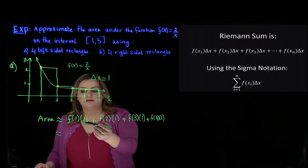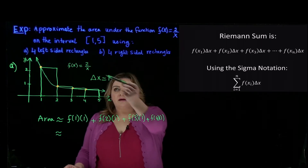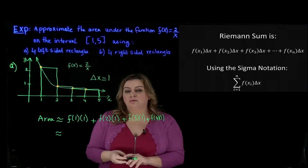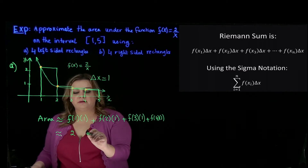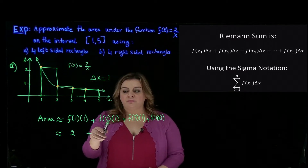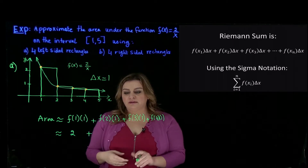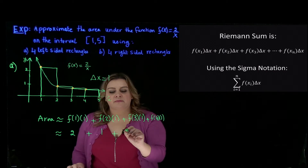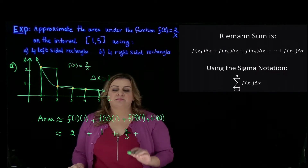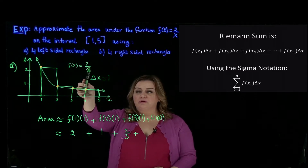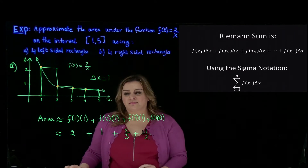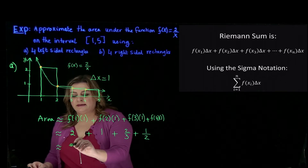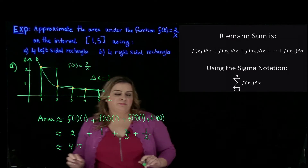Evaluating f of x equals 2 over x: f of 1 equals 2 over 1 which is 2, times 1 is 2; plus f of 2 equals 2 over 2 which is 1, times 1 is 1; plus f of 3 equals 2 over 3, times 1 is 2 over 3; plus f of 4 equals 2 over 4 which is 1 half. Putting this on our calculator, the area is approximately 4.17 units squared.